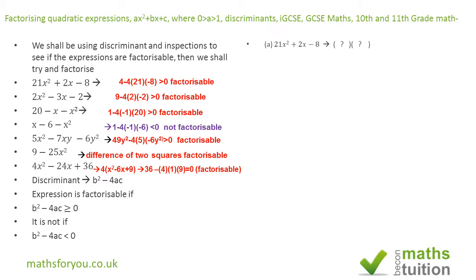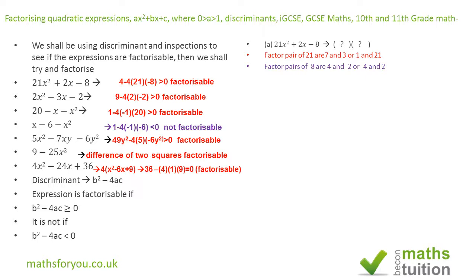Moving on to the actual factorization itself. For the first expression, we need to find factor pairs of 21 and factor pairs of minus 8. The factor pairs of 21 give us 7 and 3, or 1 and 21 — we need to be realistic, so 1 and 21 won't work. The factor pairs of minus 8 are 4 and minus 2, or minus 4 and 2. We need to combine these factor pairs to get a result of 2.